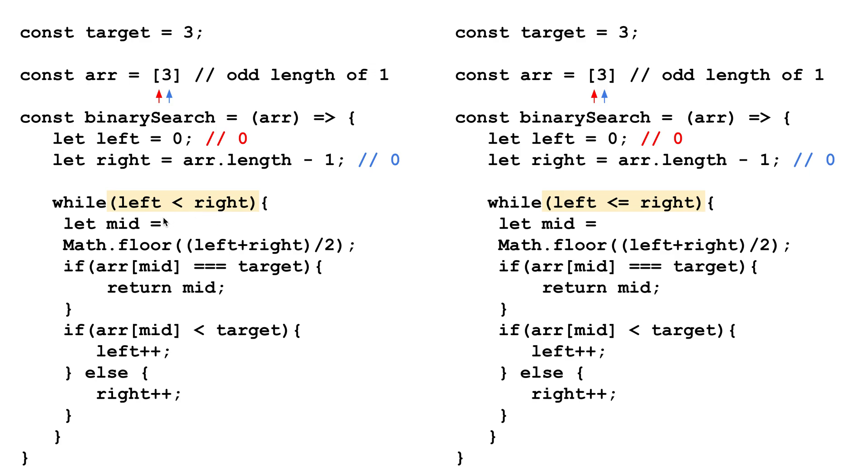So at the end when we use this, it'll return undefined or negative one if you want, even though clearly it exists right? Now on the right hand side, if we do the same thing: left is zero, right is zero. While left is less than or equal to right, this while loop will still execute and it will return the midpoint, which is the index at where we find the target value.